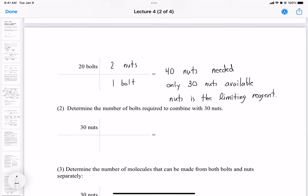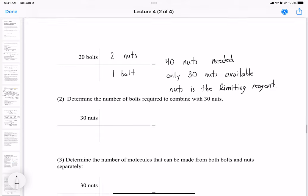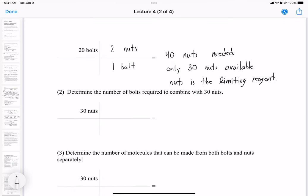Method two. Let's determine the number of bolts required to combine with 30 nuts. So in this case we're going to use the opposite fraction that we just used. So we're going to use one bolt is equal to two nuts. And then we get 15 bolts. So we need 15 bolts needed to combine with 30 nuts.